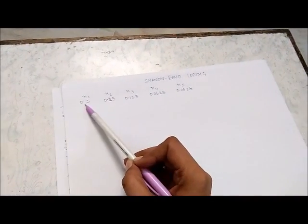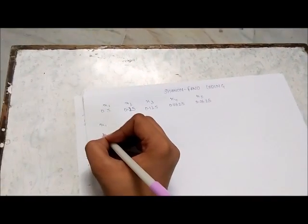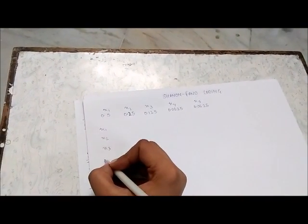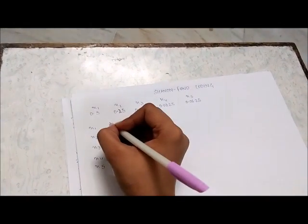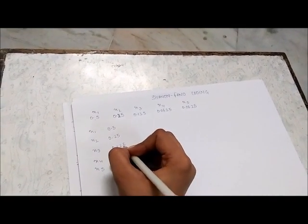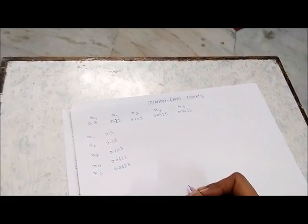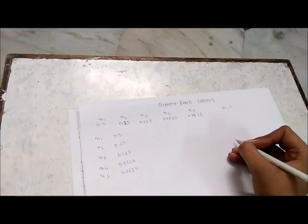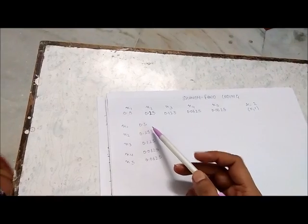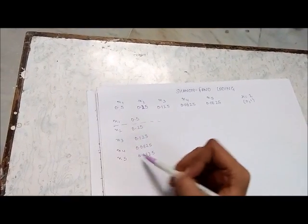Write the source symbols x1, x2, x3, x4, and x5 in the decreasing order of their probabilities. In case the value of r is not given, by default take it as 2. 2 means 0, 1. Since it is 2, we have to divide the source symbols into partitions, and divide such that the probability above the line and below the line are almost equal.